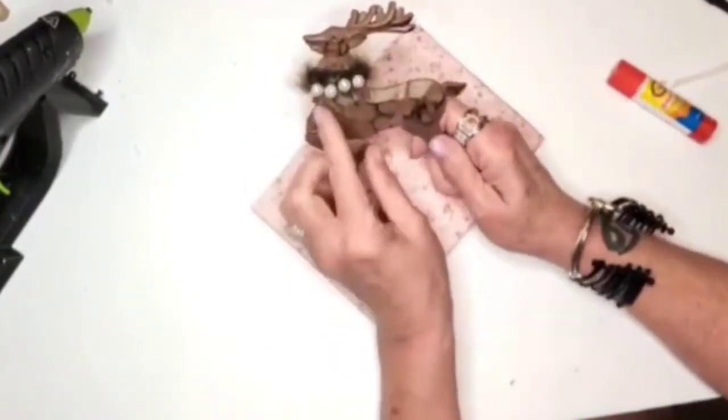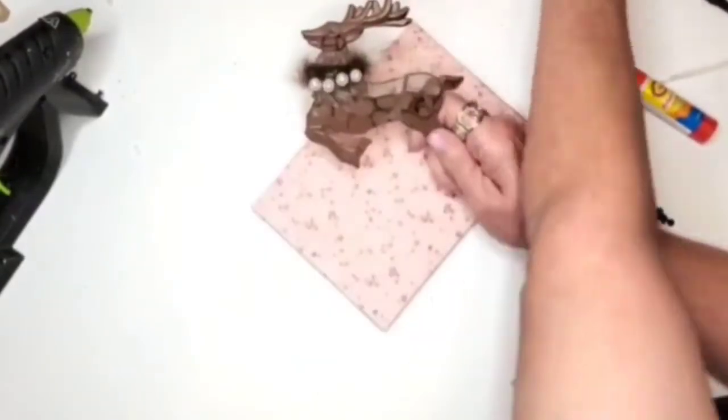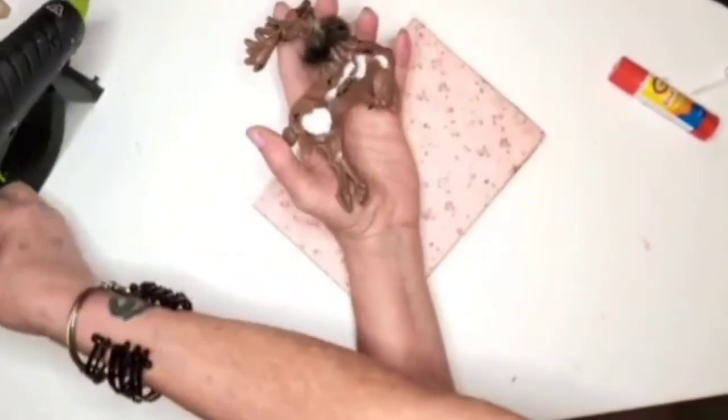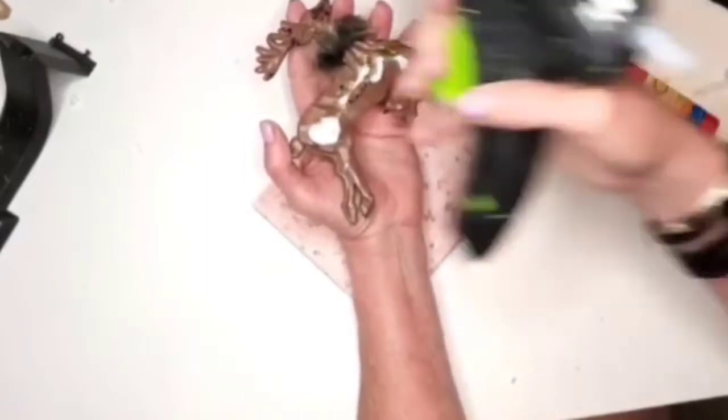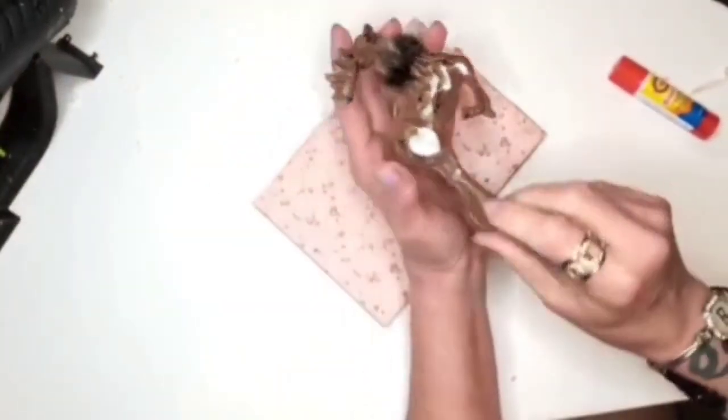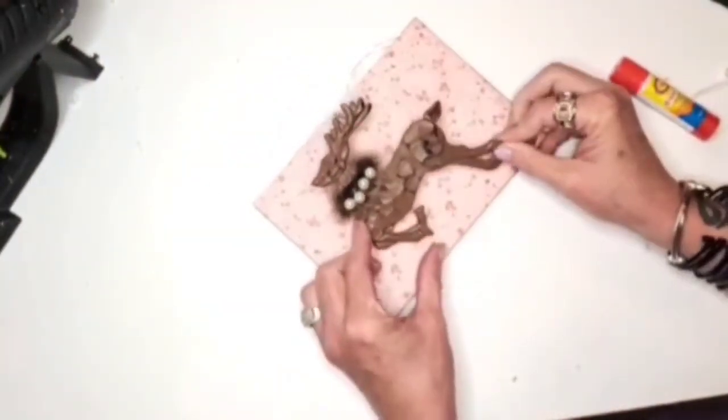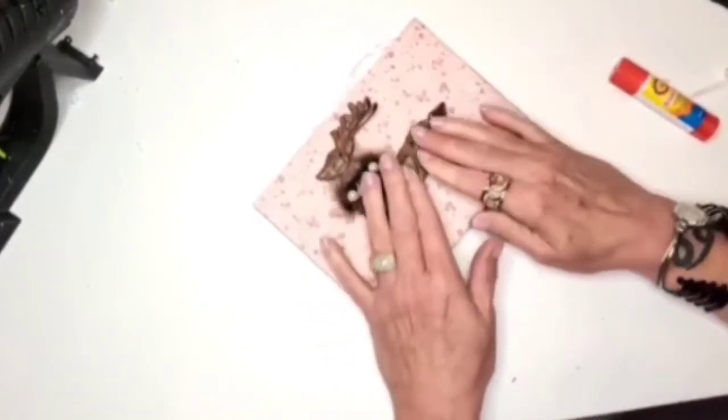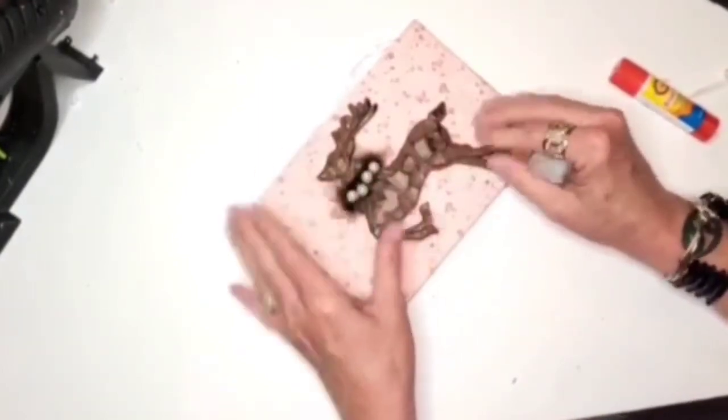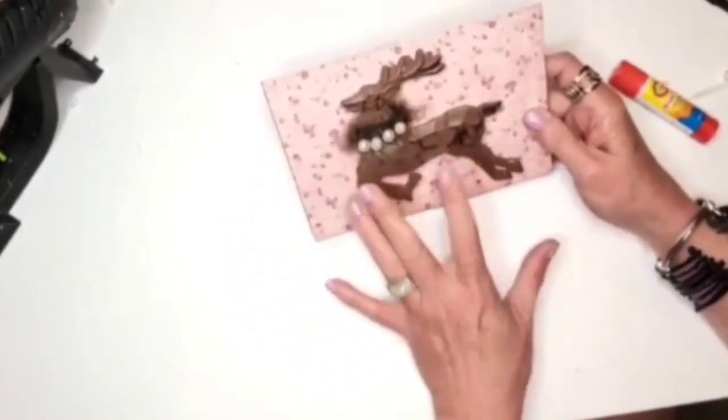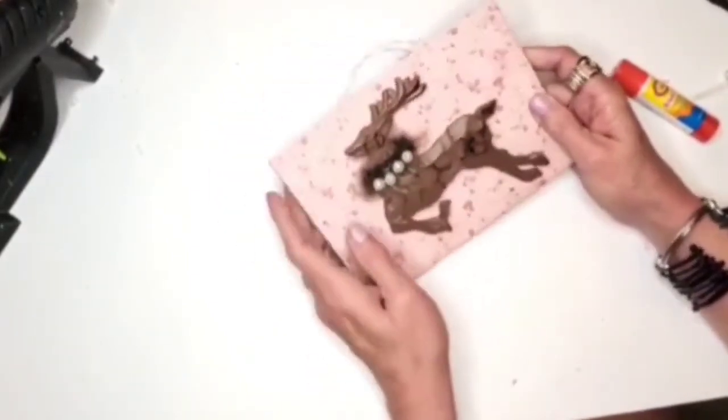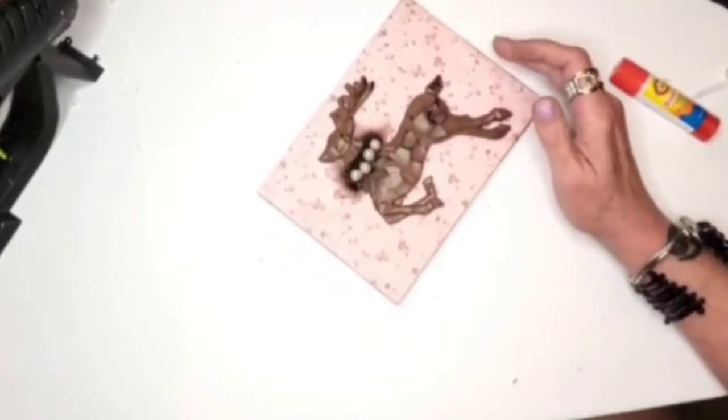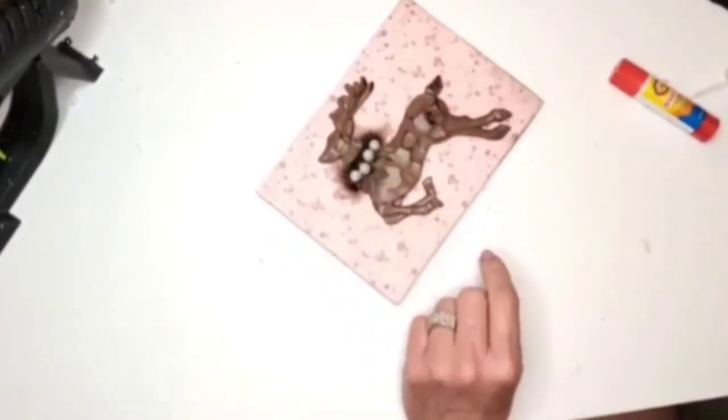I also have this little deer here that I picked up from the Dollar Tree. You can see I was going to use it on another project and I changed my mind. I thought I'll use it on this. I just put it down on here like so and I add a ribbon for the hanger. I go in and I add a little bow around the neck as I figured it. I just thought it needed just a little bit more.